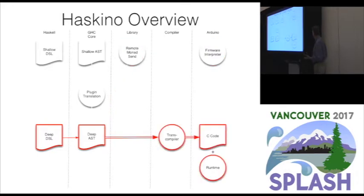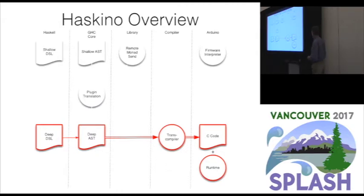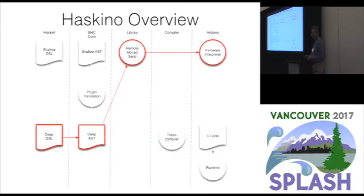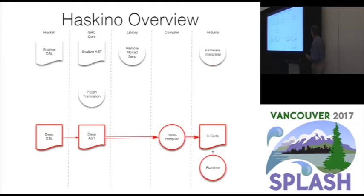So the next step was to move to a different version of interpreting the AST. Instead of running it and sending it across the serial link, we reified it into a trans-compiler and generated C code out of it. We have a small runtime that goes with it. We also added the ability to do multitasking within the interpreter, which is maintained in the C code, and some of the expression language for things like lists is handled in the runtime.